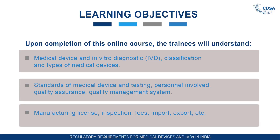Once you complete the course, you will have a brief overview about what is a medical device and in vitro diagnostics, what are their classifications, and what are the different types of medical devices like combination devices. Our learning objectives also include that you will gain cognizance about the various standards of medical device and testing. You will understand who are the technical personnel involved in the manufacture of medical devices, the quality assurance and quality management system, the manufacturing license, the inspection, the fees, and the import and export.